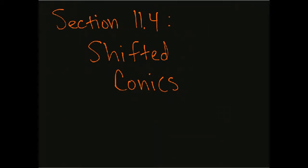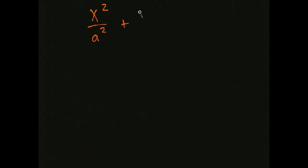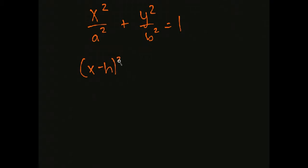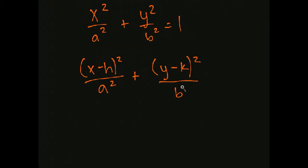Let's talk first about a shifted ellipse. Recall that an ellipse has the general equation x squared over a squared plus y squared over b squared equals 1 — remember that one has a plus between the terms, versus a negative on one of them for a hyperbola. If we shift it h units to the right, we put a minus h next to the x, just like the shift translations from previous chapters. If we want to go k units up, we put minus k next to the y over b squared. So that is shifting up k and right h units.